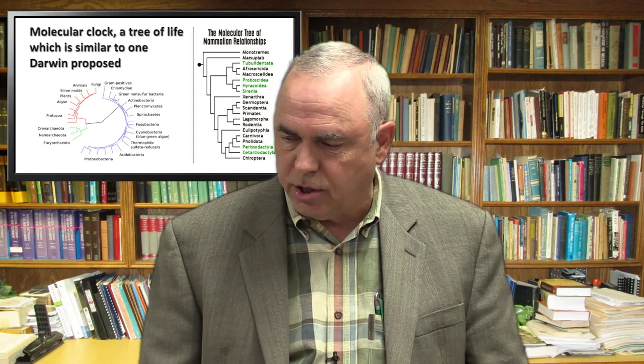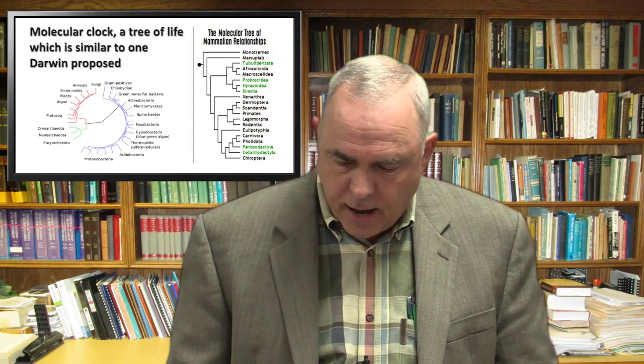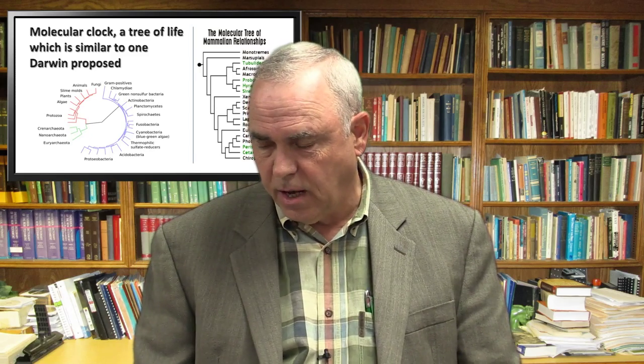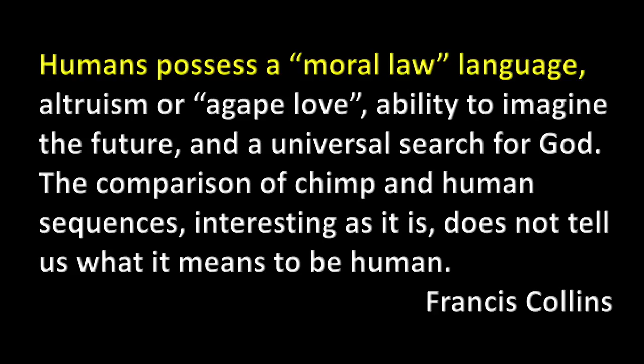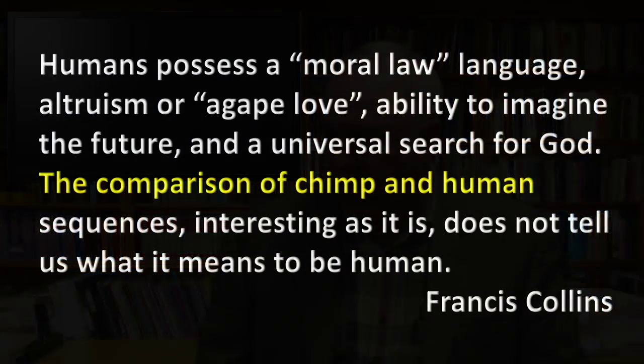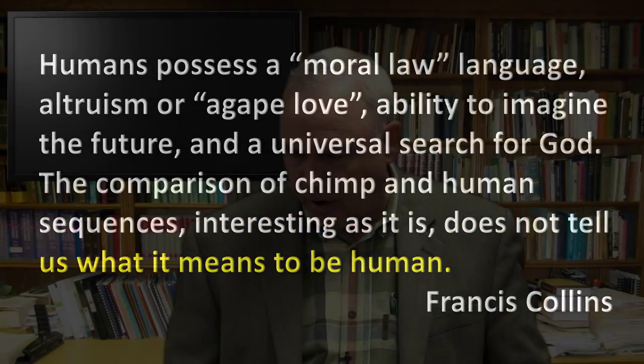To his credit, Collins is not saying humans and apes are the same — he understands there's a difference. In his book he lists that humans possess moral law, language, altruism, agape love, the ability to imagine a future, and a universal search for God. I would agree with all that. My question is: where does he think that came from, and when did it occur if we evolved from apes? Most people who believe in theistic evolution can't answer that.